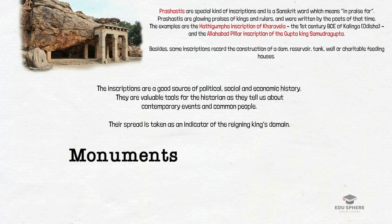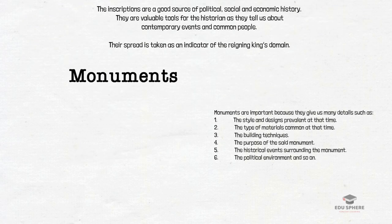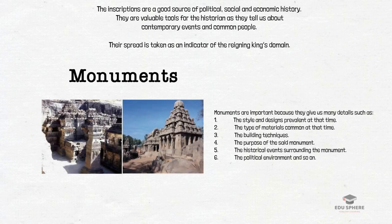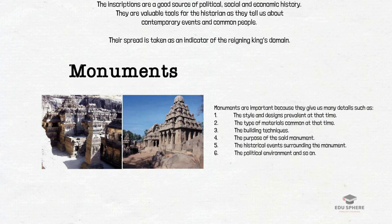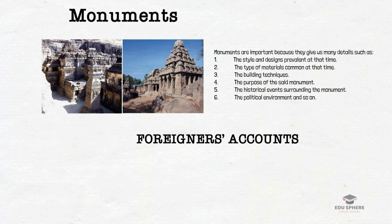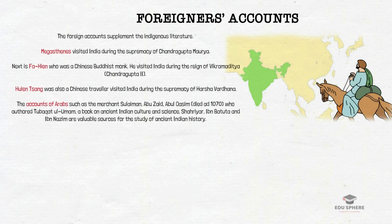Next is about monuments. Temples and sculptures found all over the country from the Gupta period up to recent times show the architectural and artistic history and achievements of Indian culture. Monuments are quite important because they give us details such as the style and designs prevalent at that time, the type of materials, building techniques, purpose of the monument, historical events surrounding it, the political environment and so on. Many travelers came to India as pilgrims, traders, settlers, soldiers and ambassadors, leaving behind accounts of places they visited and things they saw. If studied with due caution, these accounts give a lot of valuable historical information, as foreign accounts supplement the indigenous literature.